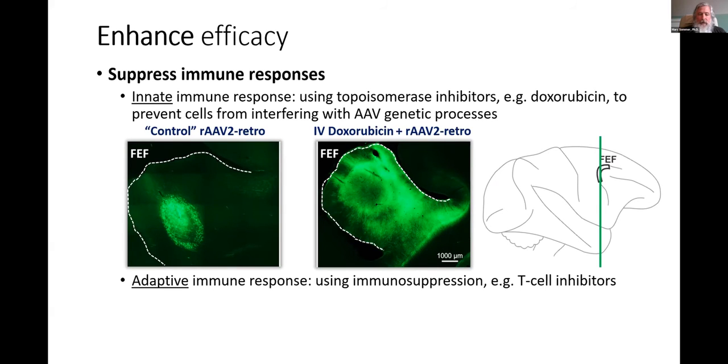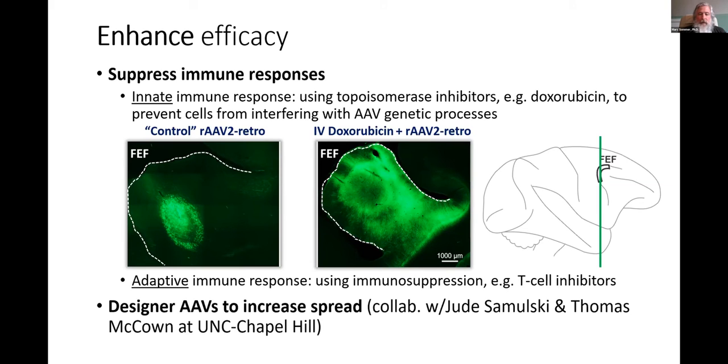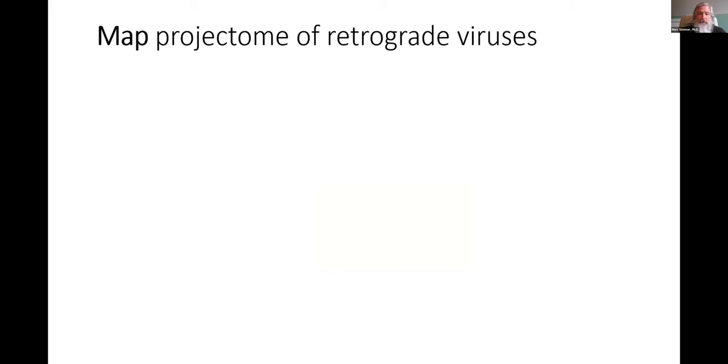We also want to suppress adaptive immune responses, such as those from T cells. So we're using T cell inhibitors. And finally, we can design AAV capsids to increase the spread specifically for monkeys. This is a collaboration with Jude Samulski and Tom McGowan at UNC Chapel Hill. Now if we can get enhanced transduction and expression of the opsins, then we have the opportunity to really map the projectome of retrograde viruses in the primate brain.